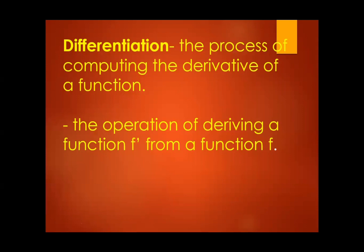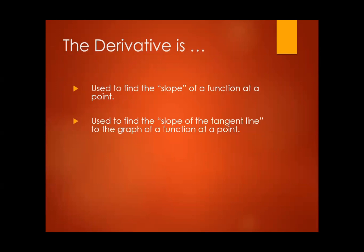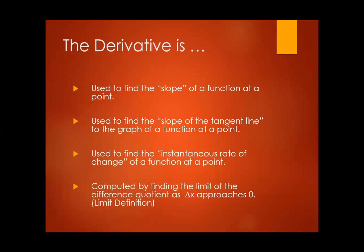Differentiation is the process of computing the derivative of a function — the operation of deriving a function from a given F. The derivative is used to find the slope of a function at a point, the slope of the tangent line to the graph of a function at a point, and the instantaneous rate of change. It is the limit of the difference quotient as change of X approaches 0.